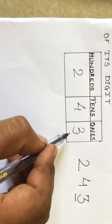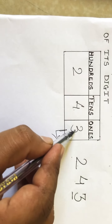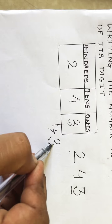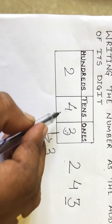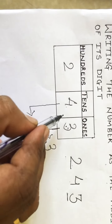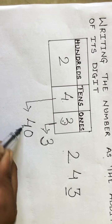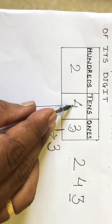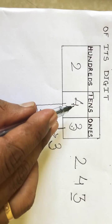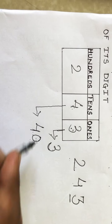Three is at ones place — at ones place, the digit itself is its place value, so place value of three is 3. Moving to tens place: four is at tens place, so its place value is 4 times 10, which equals 40. And two is at hundreds place, so its place value is 2 times 100, which equals 200.